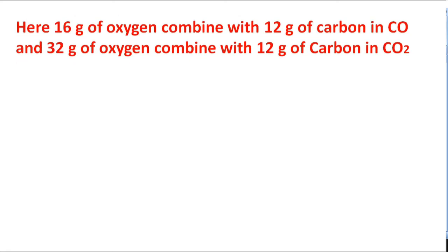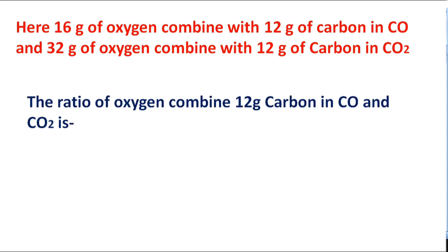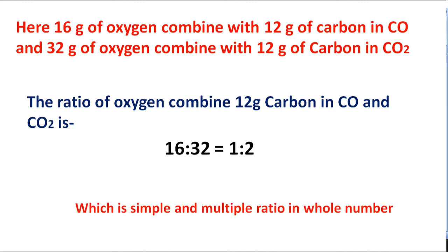Here, 16 grams of oxygen combines with 12 grams of carbon in carbon monoxide, and 32 grams of oxygen combines with 12 grams of carbon in carbon dioxide. The ratio of oxygen combined with 12 grams of carbon in carbon monoxide and carbon dioxide is 16:32, which equals 1:2 — a simple whole number ratio. These two examples explain the Law of Multiple Proportions.